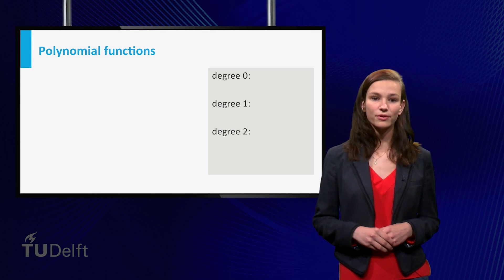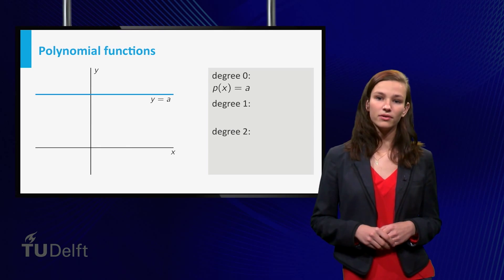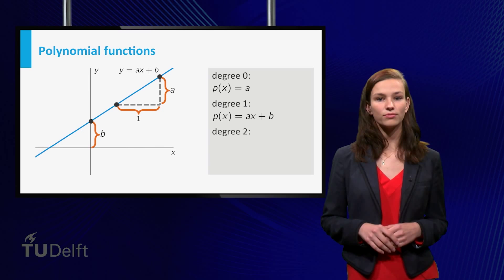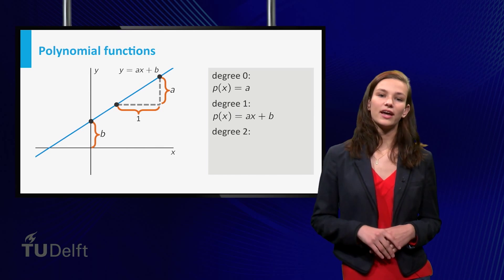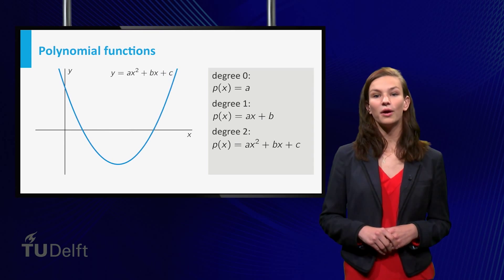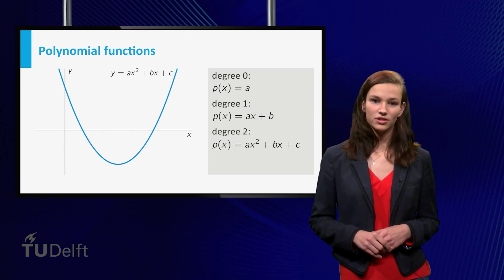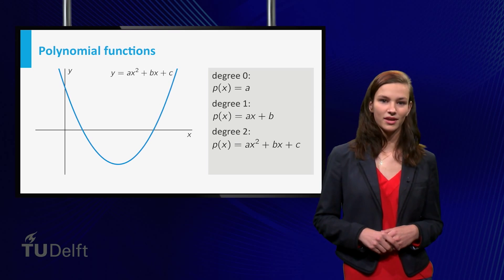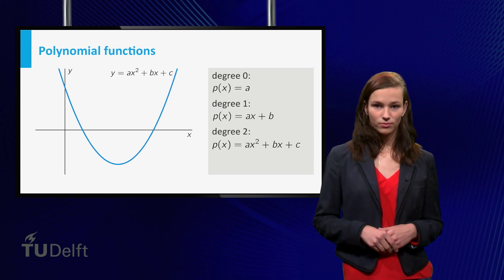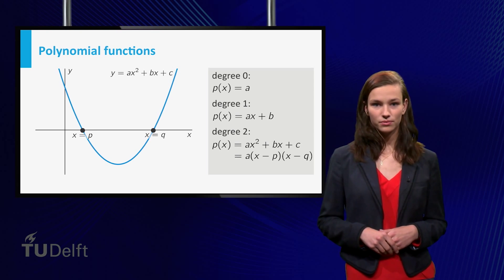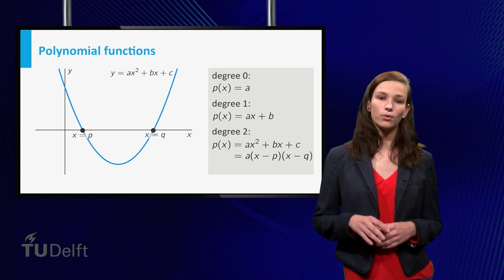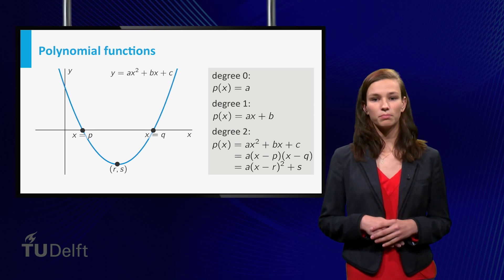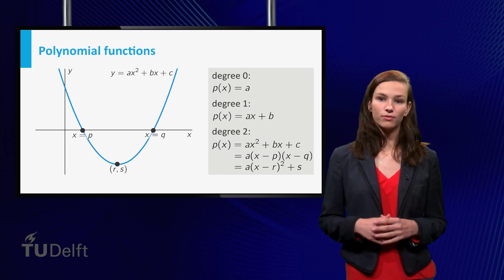It's important to understand the behavior of polynomial functions of low degree. Polynomial functions of degree 0 are of the form p(x) = a — they are constant functions. Polynomials of degree 1 have standard form a times x plus b; the graph is a straight line with slope a and y-intercept b. Polynomial functions of degree 2, also called quadratic functions, are of the form a times x squared plus bx plus c. The graph of any such function is a parabola. It's often useful, when possible, to rewrite a quadratic function in factorized form: a times (x minus p) times (x minus q), where p and q are the x values where the graph intersects the horizontal axis. Another useful form is the complete square form: a times (x minus r) squared plus s, where r and s are precisely the coordinates of the vertex of the parabola.